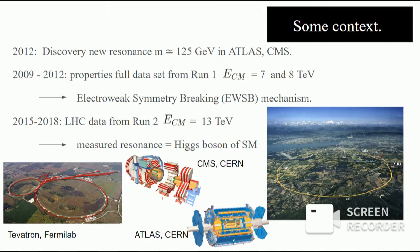Then there were two runs — run 1 and run 2. They were both used by the Large Hadron Collider to study the properties of this electroweak symmetry breaking mechanism, and this was done from 2009 to 2012, until we found the Higgs particle. And then there was a second run in which we increased the center-of-mass energy of the collider to 13 TeV. This was the way to measure with higher precision this Higgs boson and to put on solid grounds the compatibility of the measured resonance with the Higgs boson of the standard model. So this was the moment in which we could already say that this resonance was the Higgs boson we had been looking for for a long time.